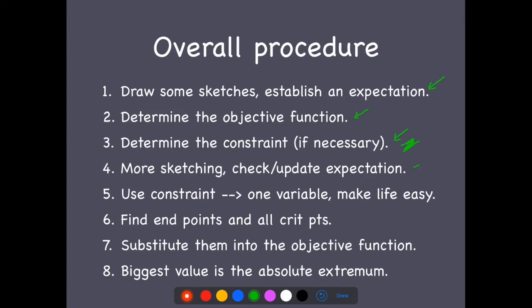I would do some more sketching and update your expectation based on any thinking you've done that may change what you had drawn or expected before. The next step is to use the constraint to reduce to one variable. That's because, when I say make life easy, we know how to do calculus to solve one variable optimization problems. That's what your target is.